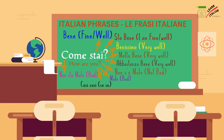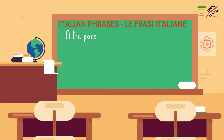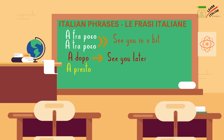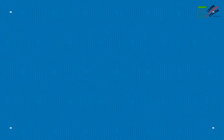Other basic phrases in Italian: 'a fra poco' means see you in a bit, so if you want to tell a friend see you in a bit, you say a fra poco. 'A dopo' means see you later. 'A presto' means see you soon. 'A domani' means see you tomorrow.